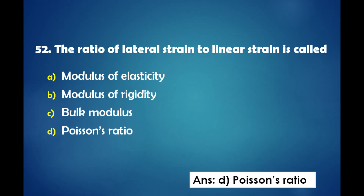The ratio of lateral strain to linear strain is called as: a) Modulus of Elasticity, b) Modulus of Rigidity, c) Bulk Modulus, d) Poisson's Ratio. The answer is: the ratio of lateral strain to linear strain is called Poisson's Ratio.